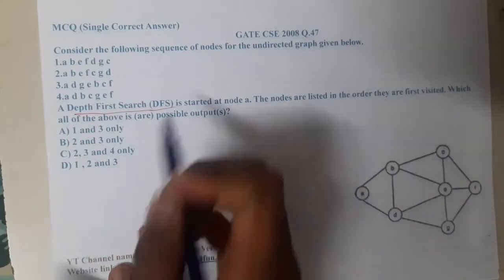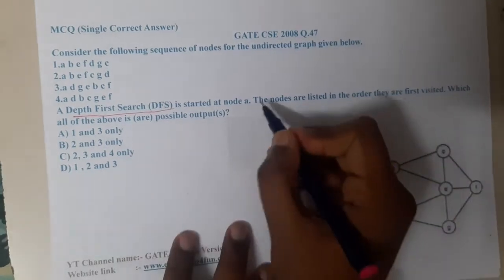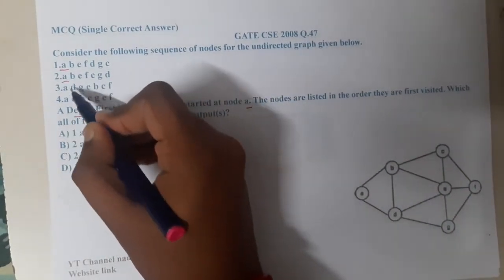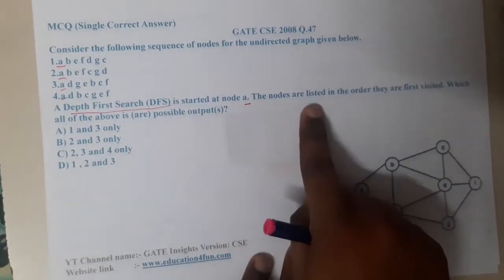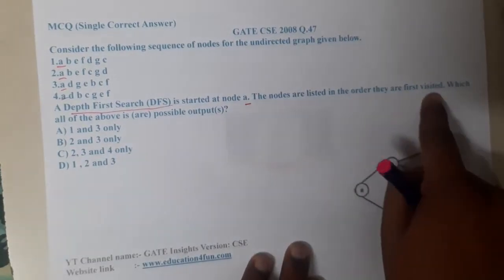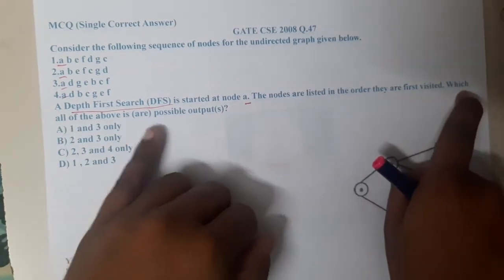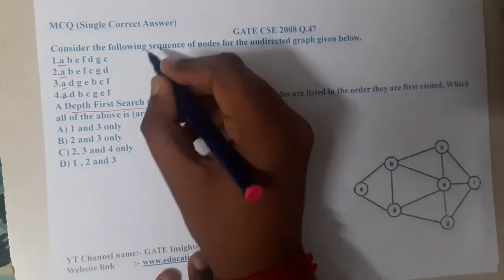So the graph is here. They gave the depth first search order, DFS order, starting from node a. So they clearly gave the starting node is a, so in all options they started from a. That's absolutely good. The nodes are listed in the order they are visited first.